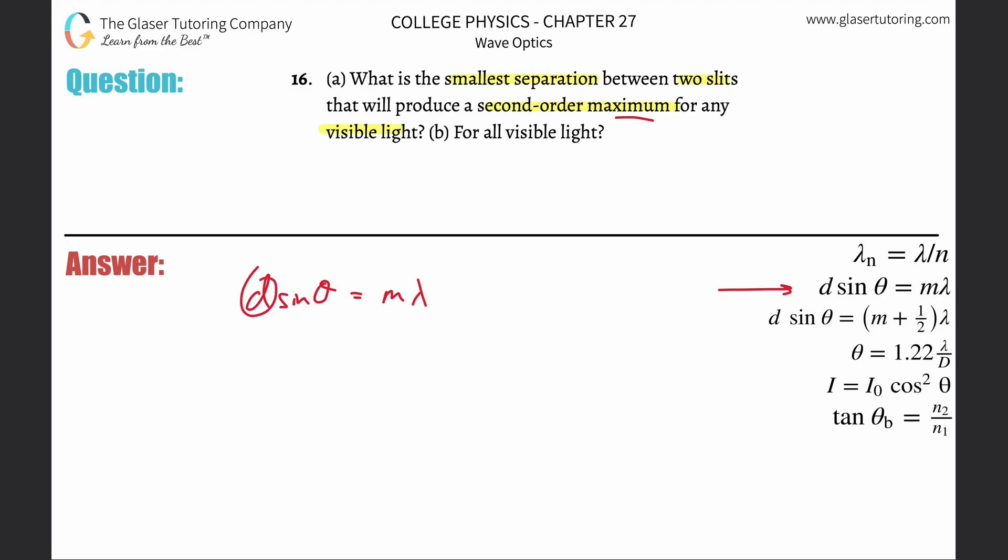So we want to know the smallest distance here, so simply divide the sine of theta over to the right. Now we have a formula for distance, or separation.